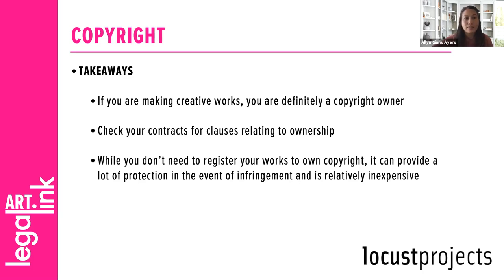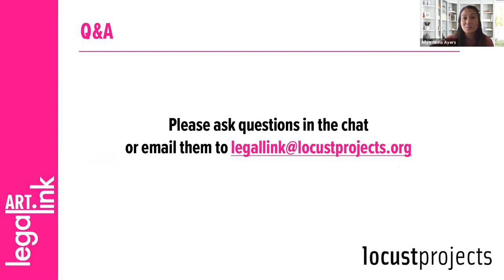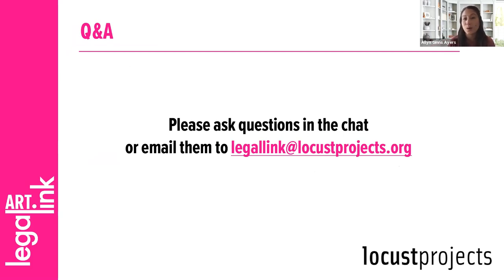That was an overview of the four kinds of intellectual property that are available — trade secrets, patents, trademarks, and copyright. I hope that gives you some idea of how to recognize what might be applicable to your practices and how you might take steps to protect those works going forward, or even looking backward at what you own now.